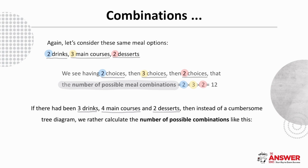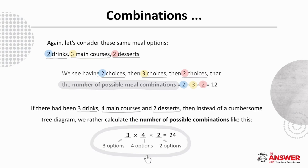Instead of a cumbersome tree diagram, which you can offer yourself a moment to picture in your head, we rather calculate the number of possible combinations using the fundamental counting principle: three times four times two, and this gives us 24 possible combinations in this scenario.